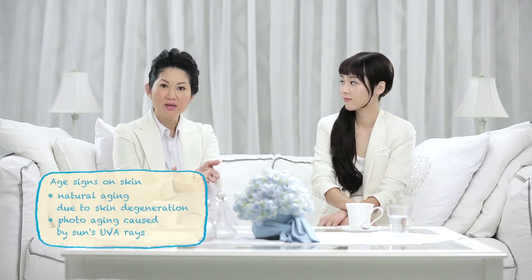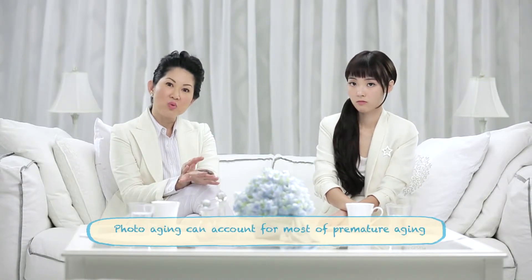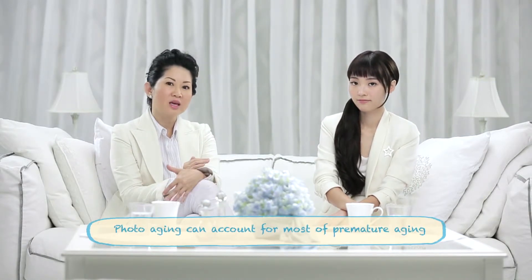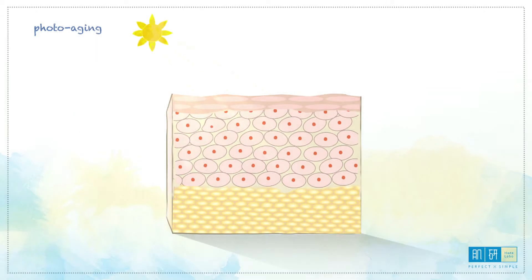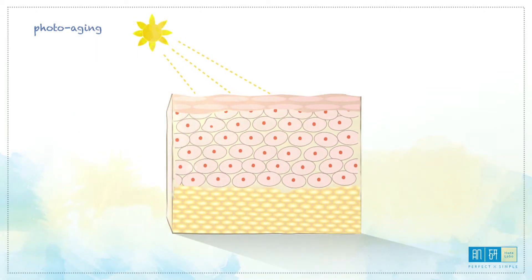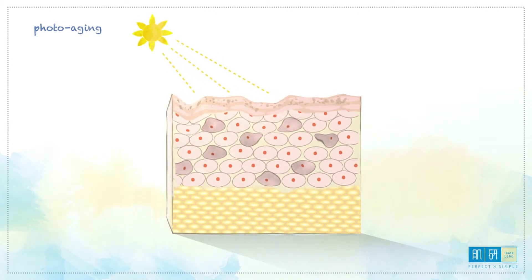Ageing occurs in two ways: photoageing and skin degeneration. Photoageing can account for 70% of ageing when we do not take care of our skin, whereas skin degeneration is a natural process. Photo damage refers to the situation when the skin is overly exposed to UV rays over time, leading to cellular death and DNA mutations in some cases.